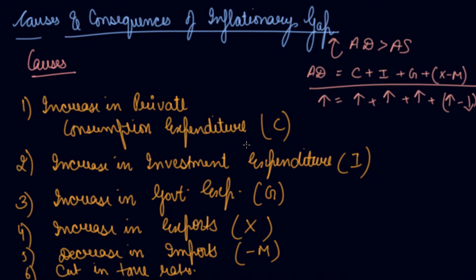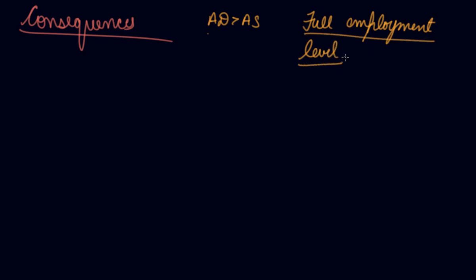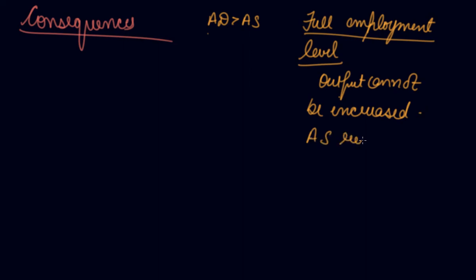Now let's understand the consequences of an inflationary gap. If your aggregate demand is greater than your aggregate supply, what will be the consequences? When your aggregate demand increases beyond its full employment level, output remains constant because you are at your full employment level — your output cannot be increased because you have completely used your resources.